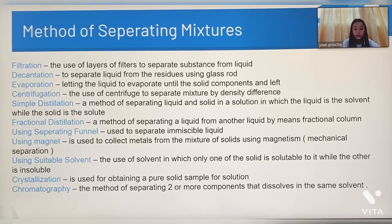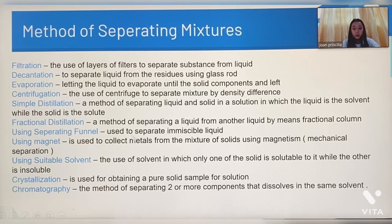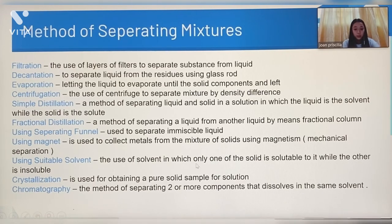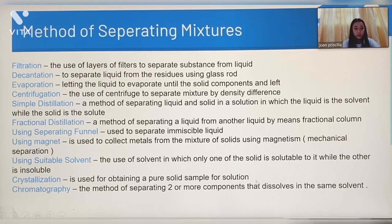Fractional distillation is a method of separating a liquid from another liquid by means of a fractional column. Using a separating funnel is used to separate immiscible liquids. Using a magnet is used to collect metals from a mixture of solids using magnetism or mechanical separation. Using a suitable solvent is the use of a solvent in which only one of the solids is soluble to it while the other is not. Crystallization is used for obtaining a pure solid sample from solution. Chromatography is the method of separating two or more components that dissolve in the same solvent.